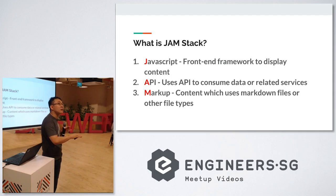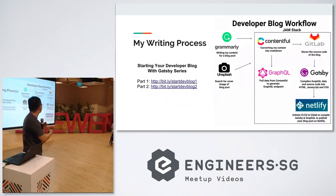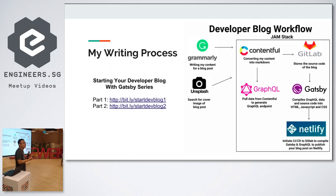These three things form the core of Jamstack, and it's a technology-agnostic stack, meaning you can use different types of technology to achieve what you want. For example, NGNEXT SG's website uses a variant of Next.js. This is my developer workflow for creating my blog. I use Contentful as a CMS — think of it like WordPress. I also use GraphQL, Gatsby which is a React framework, and Netlify for hosting services.